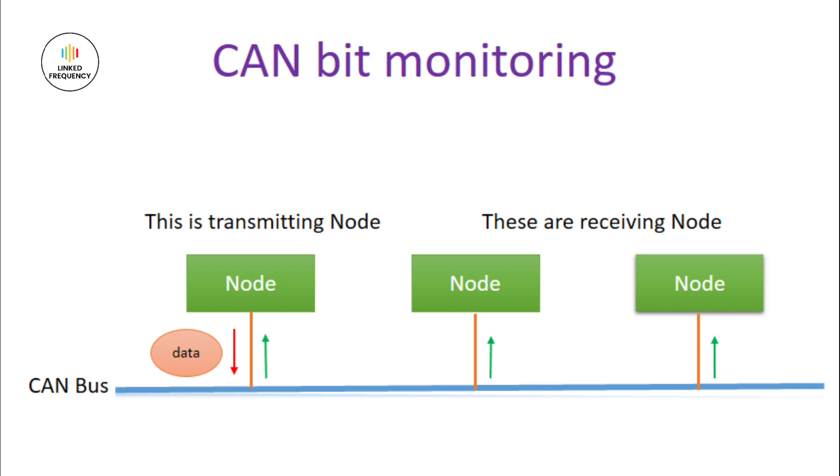The transmitted bit and the bit read from the CAN bus must be the same. If they're not the same, a bit error is indicated immediately and further data transmission is stopped. However, if the transmitted data and read data are the same, transmission continues on the CAN bus.